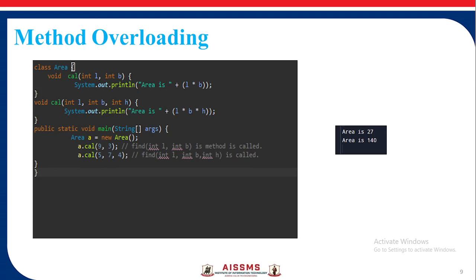Here, class `area` has a method `cal` taking parameters int L and int B, and another method `cal` taking int L, int B, and int H. When we create the object of class `area` as A, calling `A.cal` with two parameters calls that method, and calling `A.cal` with three parameters calls the method with three parameters. We get the first answer as 27 and the second as 140.